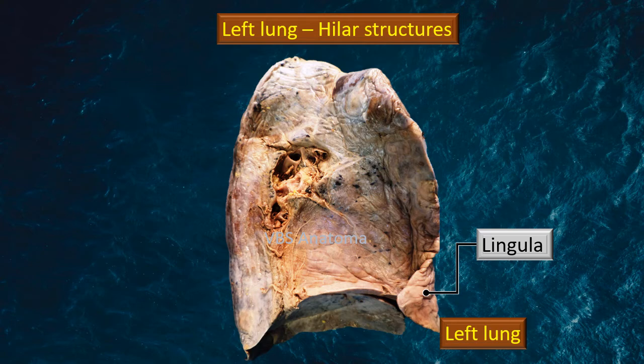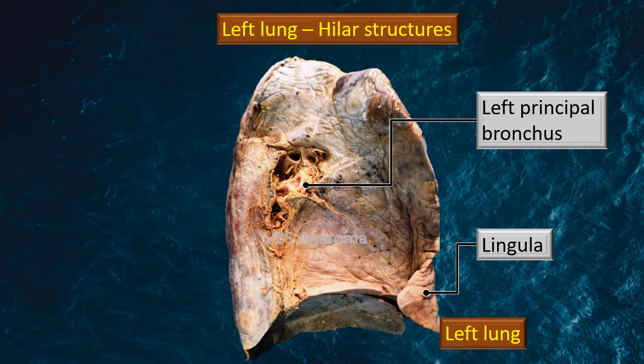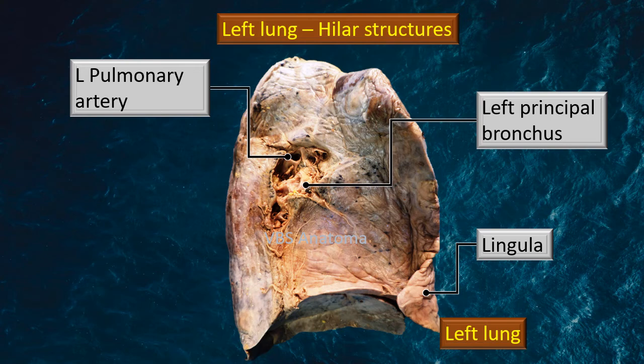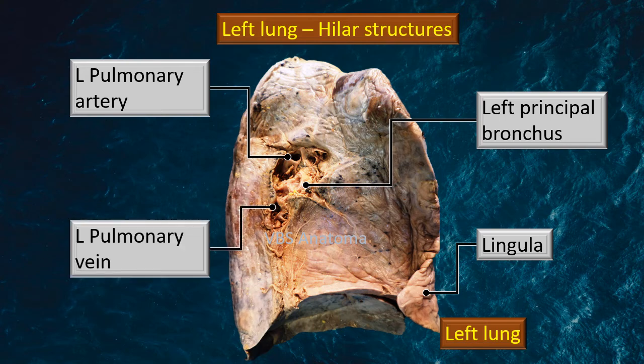Just like we studied the right hilar structures, let's look at the left hilar structures. You see the left principal bronchus. Here the plane of section is a little more medial, so we don't see the lobar bronchus, but depending upon the level of section you can see the lobar bronchus as well, as we saw on the right side. Incidentally, the lingula is a small projection just below the cardiac notch along the upper border — I had missed it in the previous video. The left pulmonary artery is immediately behind the principal bronchus — remember, this artery's branching pattern shadows the tracheobronchial tree and is most of the time behind it. The left pulmonary veins are also shown in the lower part of the hilar region.